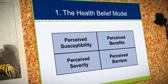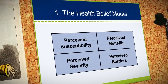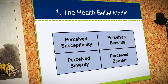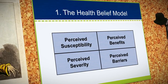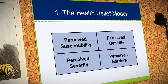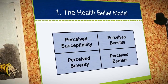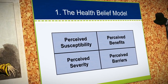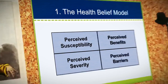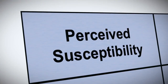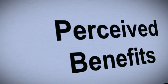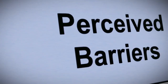Let's take a look at one of the earliest theories of health behavior, the health belief model. This model has a lot of appeal because it's logical, simple, and it provides very useful insights into behavior and behavior change. There are four key constructs in the health belief model: perceived susceptibility, perceived severity, perceived benefits, and perceived barriers.